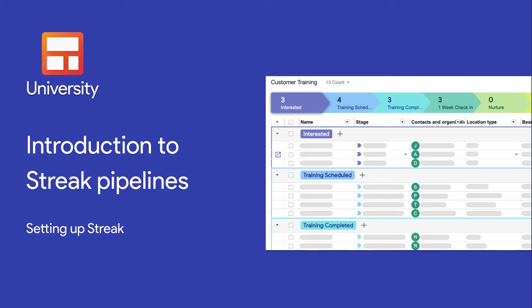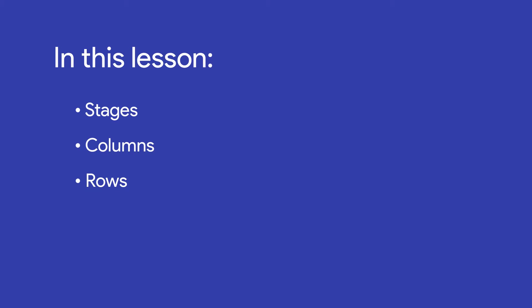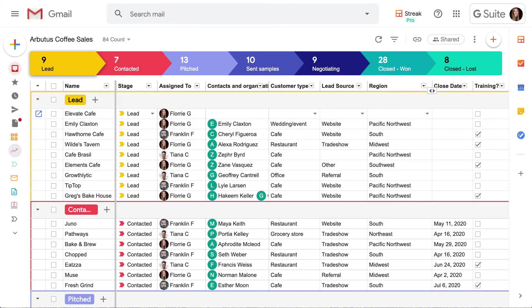Pipelines allow you to track information through a process. In this video we'll show you the three components of a pipeline: stages for each step of your process, columns to track detailed data, and rows which are the actual things you're moving through your pipeline. A pipeline looks like a spreadsheet but it can actually do a lot more. In fact it's the main tool we'll use to manage our workflow in Streak.